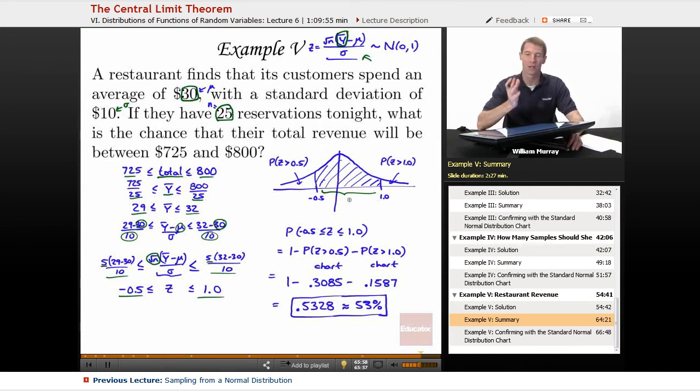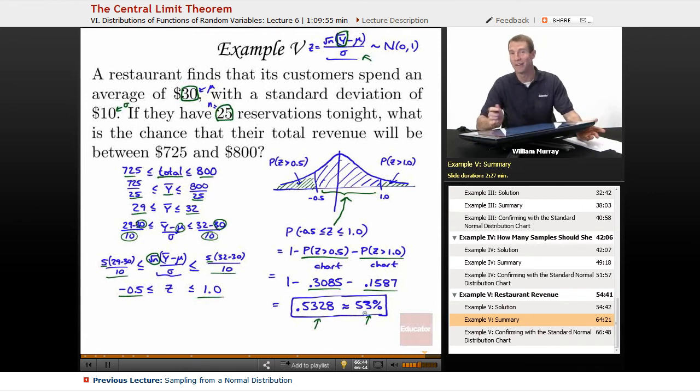So I'm really looking for the probability between negative 0.5 and 1.0 for a standard normal variable. Now, the way my chart works, and some people's charts work a little differently. But the way my chart works is it'll tell you these tail probabilities. And then, well, it tells you the positive tails, but you can work out the negative tails the same way. So what I'll do is I will look up the two different tails there and subtract them off from one. And that'll give me this probability in the middle that I'm really looking for. I'll confirm those on the next page with the chart. It's 0.3085 and 0.1587. And once I look those up, I can drop them back into the calculation and just reduce it down to 0.5328, which is about 53%. So that's my probability that my restaurant is going to make between $725 and $800 tonight.